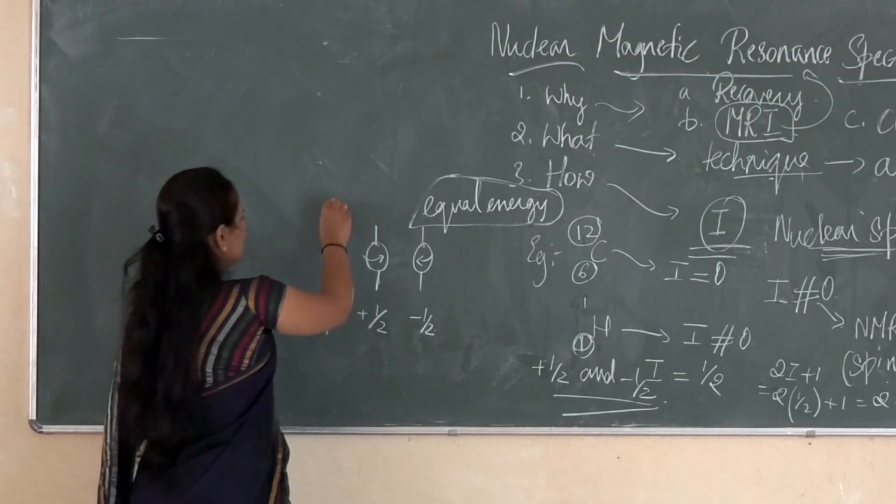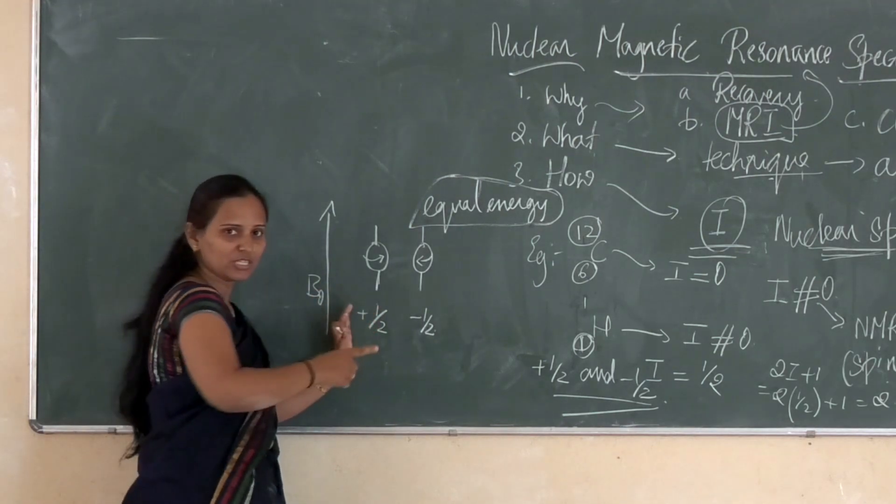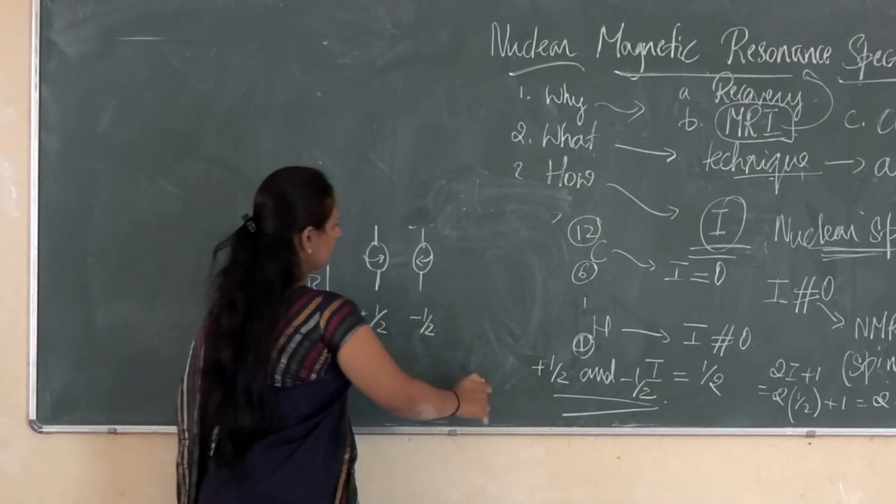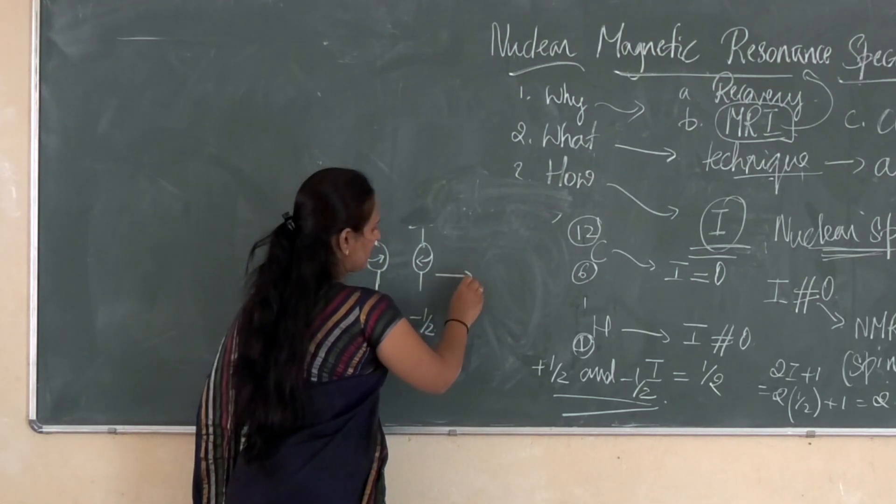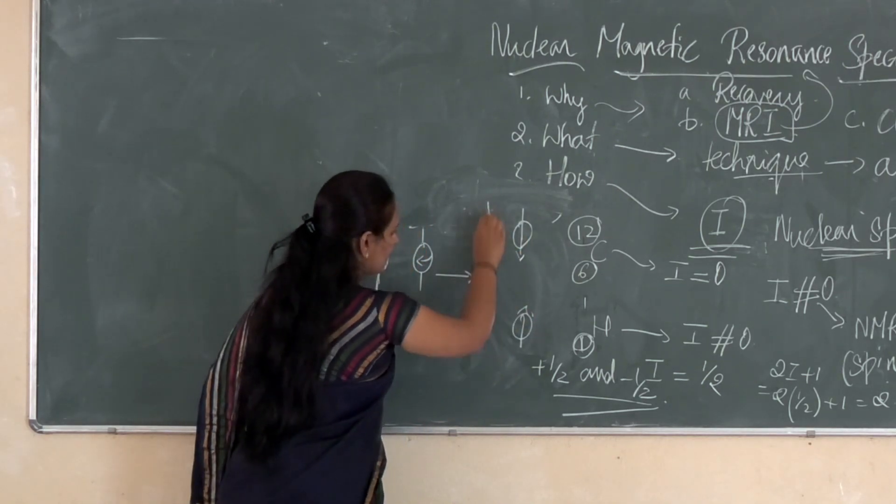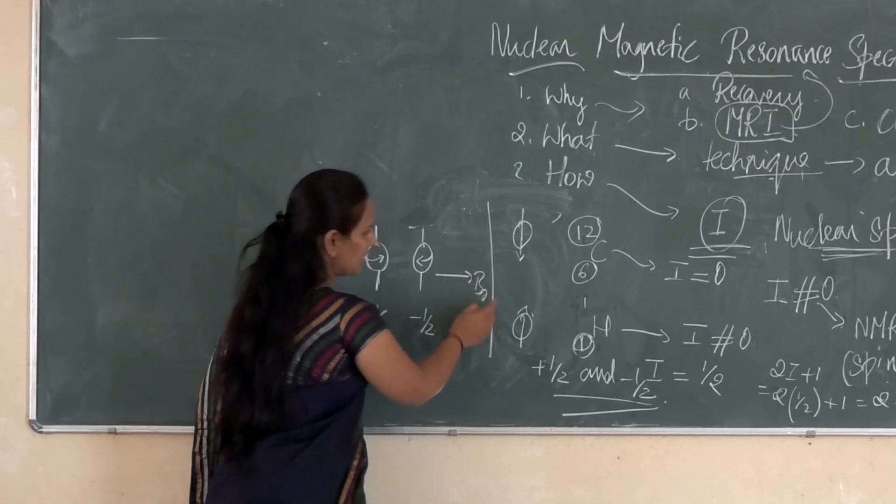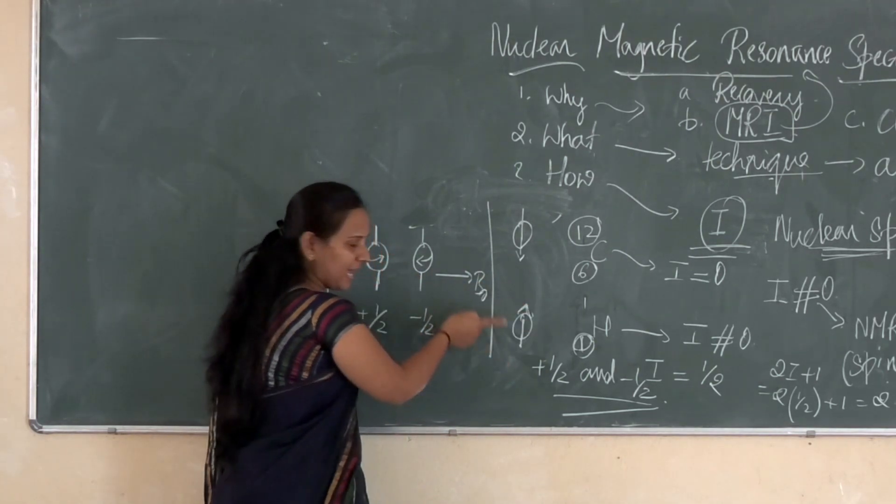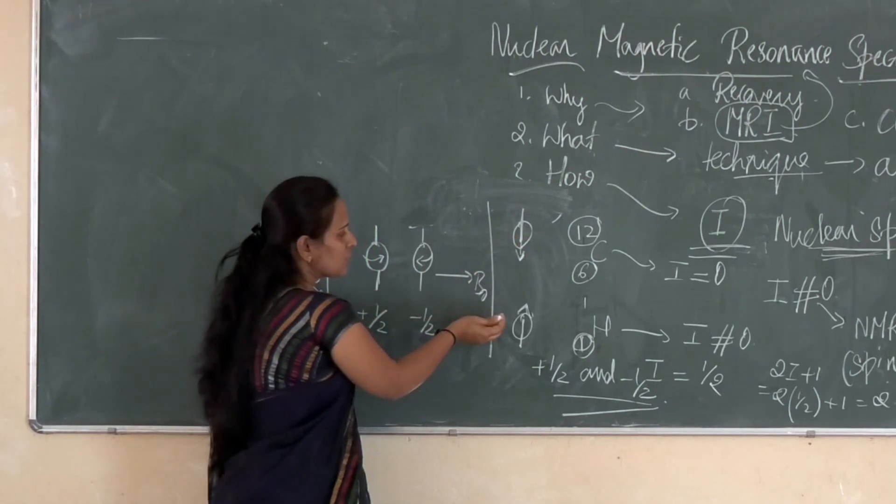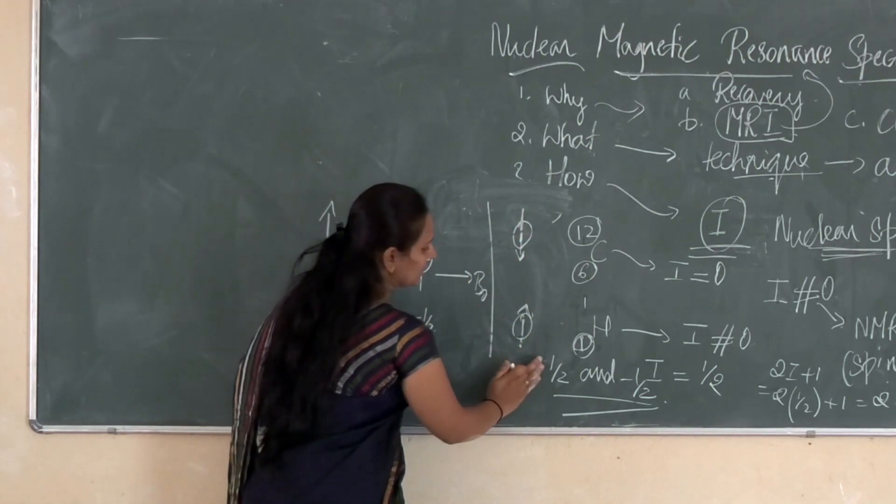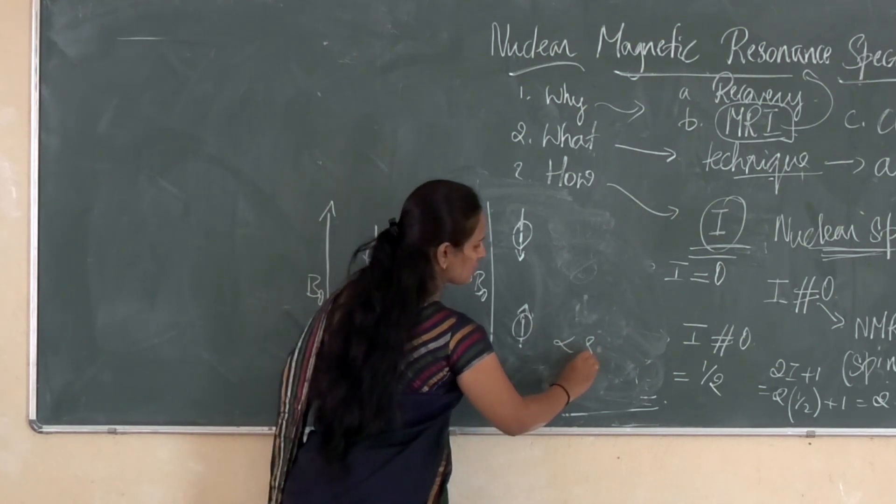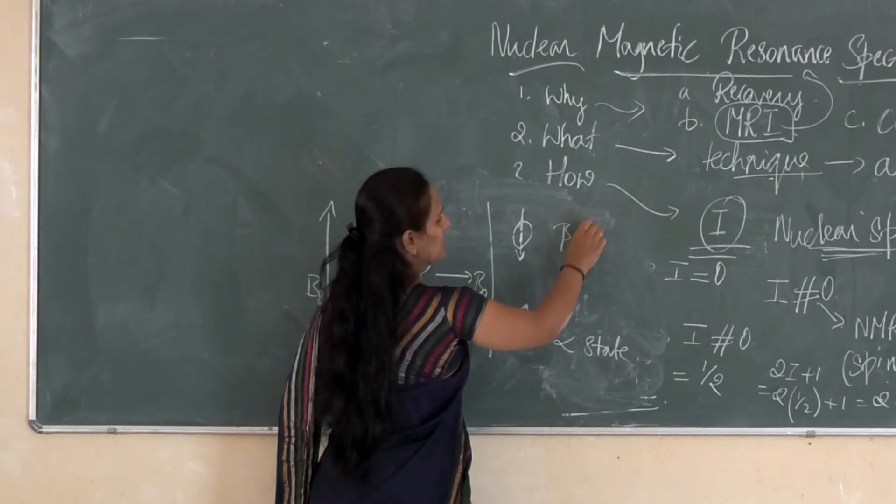If an external magnetic field B0 is applied to this spin state which are in equal energy level, what happens? These spin states align themselves parallel to the applied magnetic field or anti-parallel to the applied magnetic field. The spin states have two different energy states. One is called as alpha state and one is called as beta state.